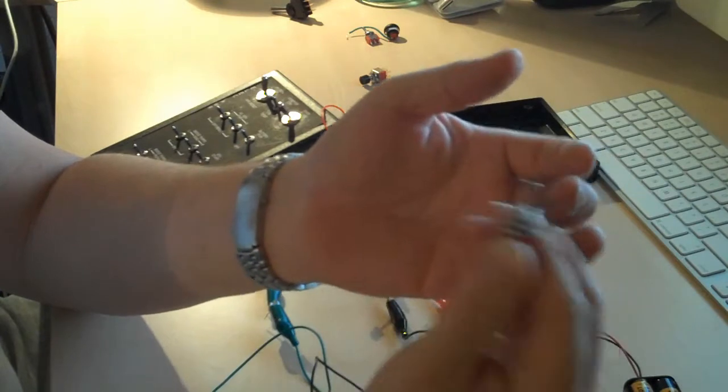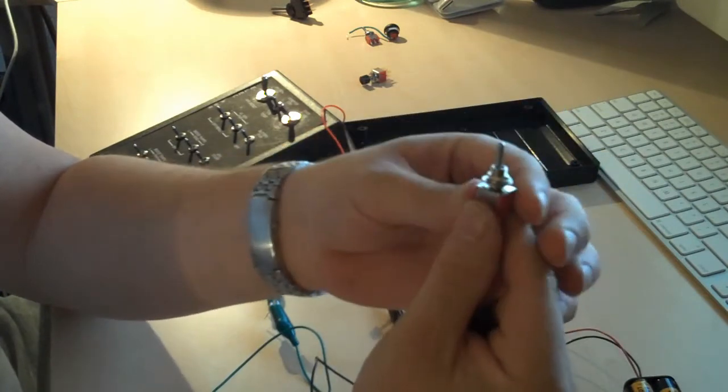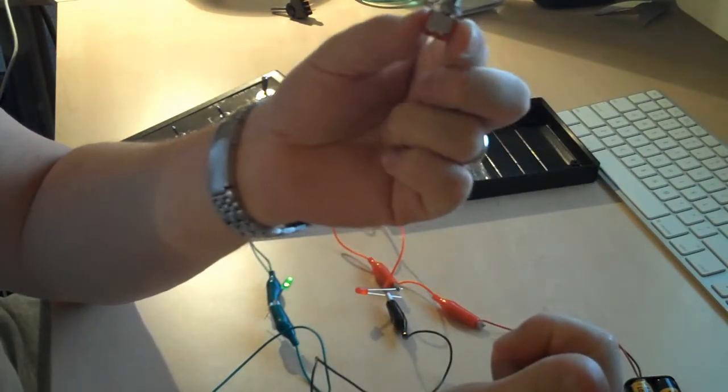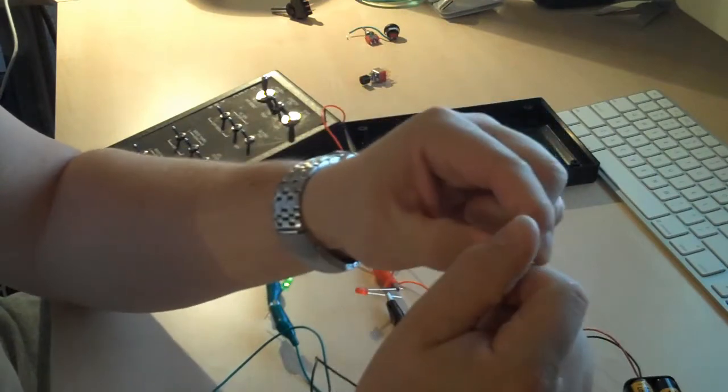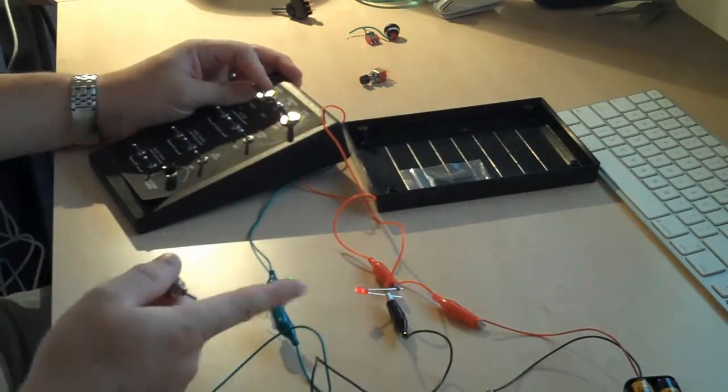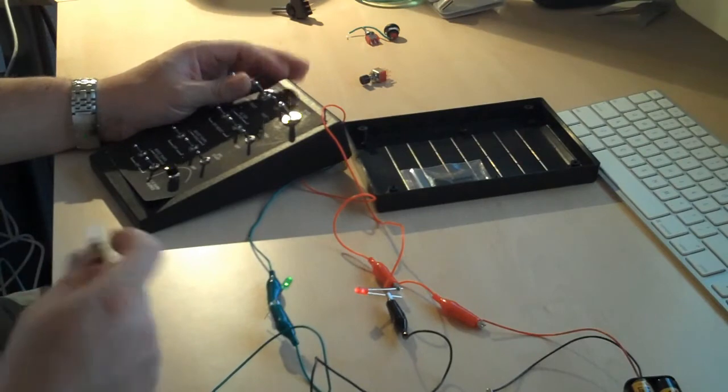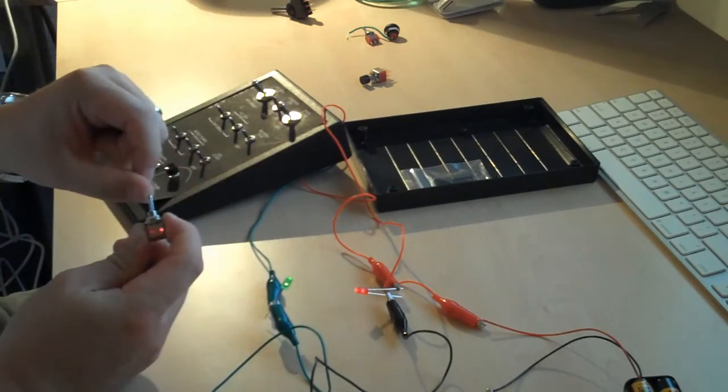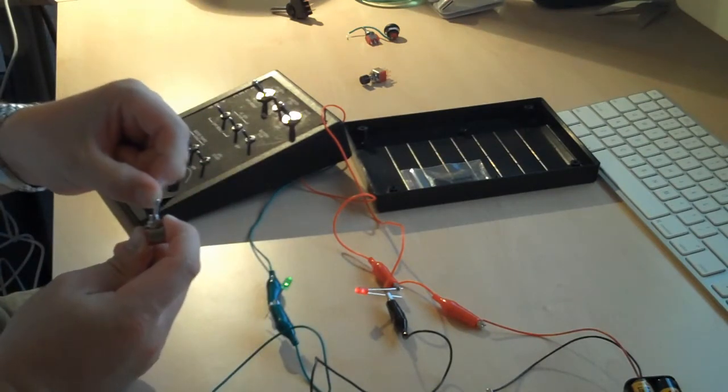So this is one type of switch called a momentary on switch. Very useful because it just sends a quick pulse rather than stays on the whole time. If I use this switch the red light would only be on as long as I held this up.